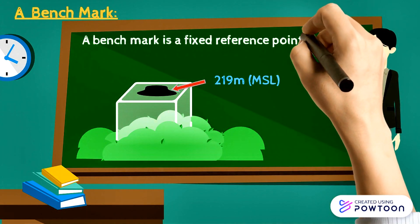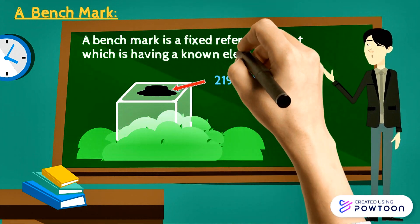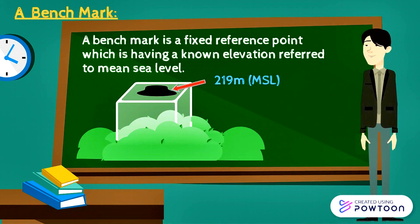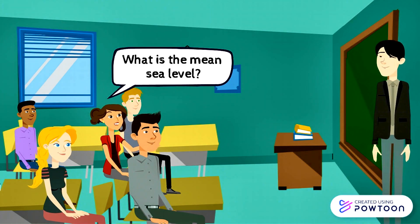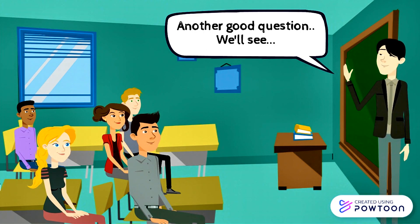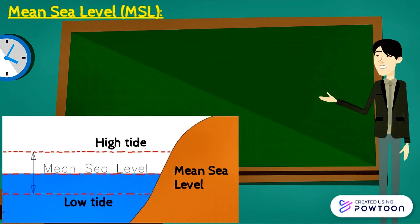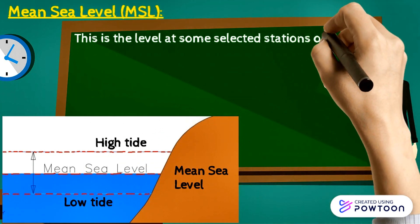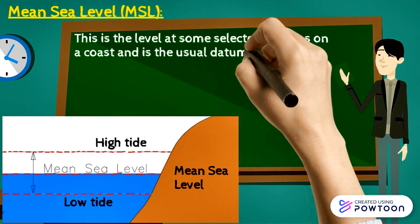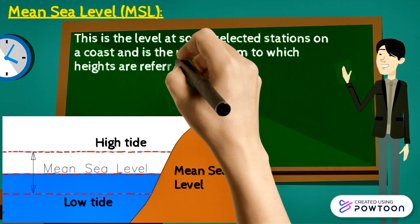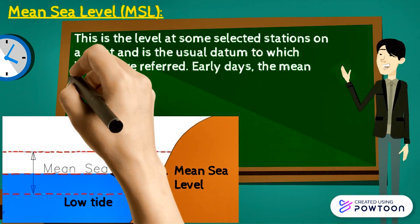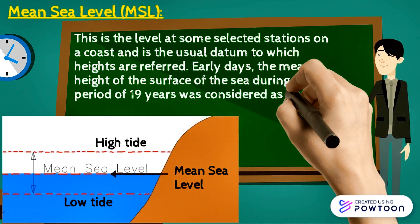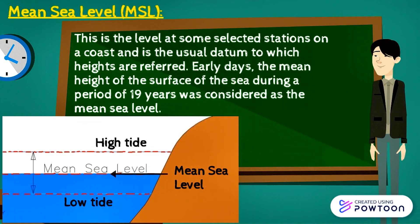A benchmark is a fixed reference point which has a known elevation referred to mean sea level. Mean sea level is the level at some selected stations on a coast and is the usual datum to which heights are referred. In early days, the mean height of the surface of the sea during a period of 19 years was considered as the mean sea level.